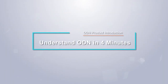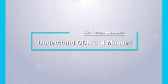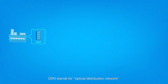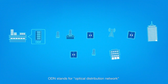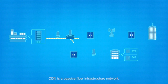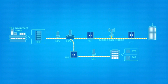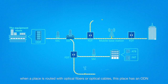Understand ODN in four minutes. ODN stands for Optical Distribution Network. ODN is a passive fiber infrastructure network in fiber to the home. It is the network segment between the OLT and the ONT.